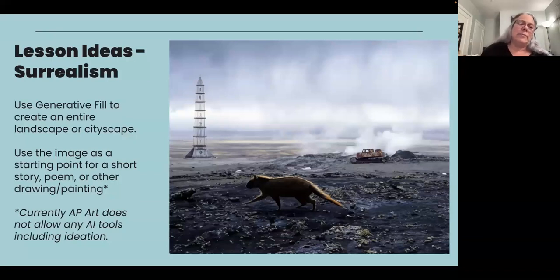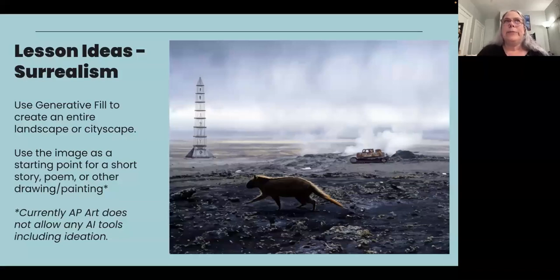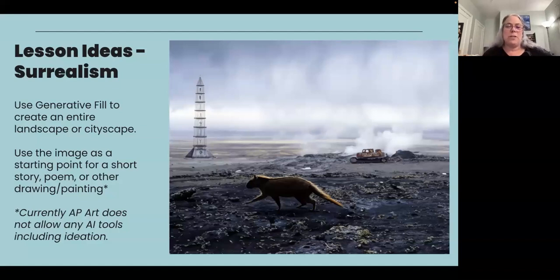I think having them do the manual assignment and then doing AI helps them understand there's still effort involved. At least they have the knowledge that if I want something very specific, I need to probably go out and create it myself — take a picture of it myself — because it's always just going to be what the computer is willing to give me. I'm still working on the ideas and questioning how it is art, and things like that. For me right now, AI is an experience — it's for them to be knowledgeable about and to use ethically.